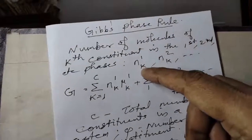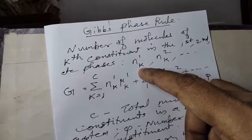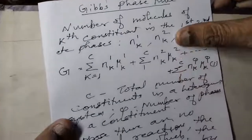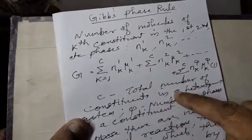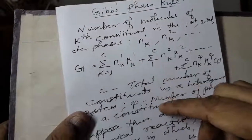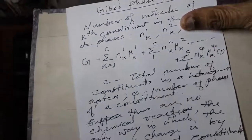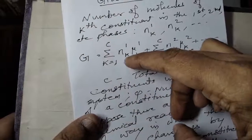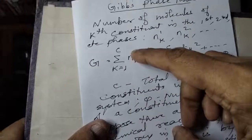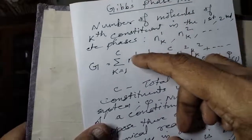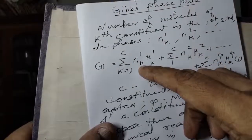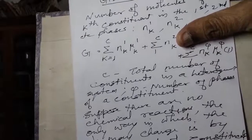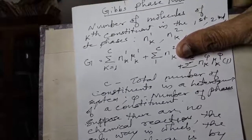Now, N subscript denotes the constituent number. The first components — the total number of constituents in a heterogeneous system. Consider five phases, and the number of phases of each constituent is superscripted. The subscript in the number refers to the phase number: one, two, ... five; and constituents one, two, ... c. The chemical potential in phase number one, molecule number one, is one parameter.